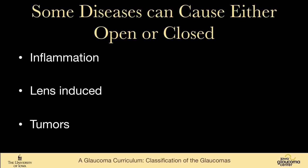There are some families of diseases that can cause either open or closed angle glaucoma. Inflammation can cause angle closure from synechiae, but it can also cause open angle glaucoma from trabeculitis or scleritis. Lens-induced glaucoma can be phacomorphic — pupillary block angle closure — or phacolytic, which is open angle. Tumors can also cause both open and closed angle forms of glaucoma.